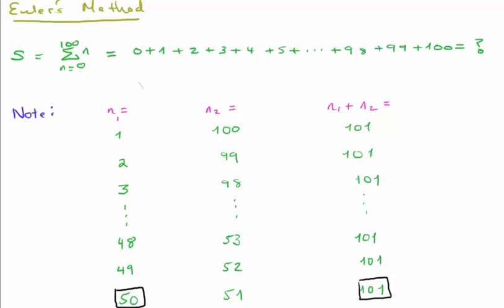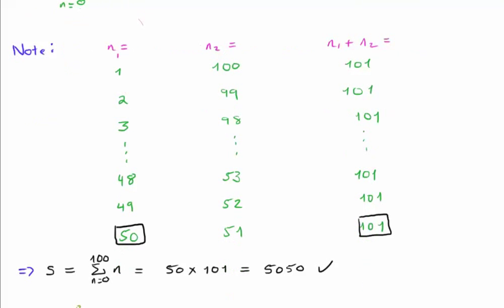This procedure can be repeated, and we find all the way down to 49 plus 52 is 101, and 50 plus 51 is 101. So that means the problem of adding the first 100 integers, or equivalently from 0 to 100, can be recast as multiplying 50 by 101.